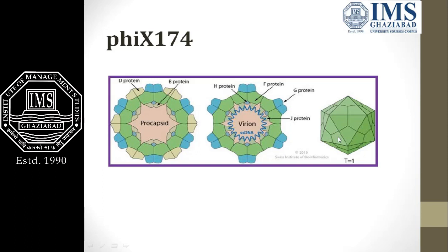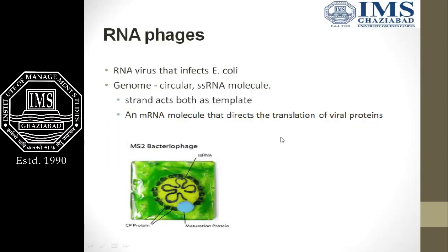Now the other type is RNA phages. As the name suggests, they have RNA as genetic material, and they infect E. coli. The genome is a circular single-stranded RNA molecule. This single-stranded RNA strand acts both as a template and as an mRNA molecule that directs the translation of viral proteins, because it is of positive sense.